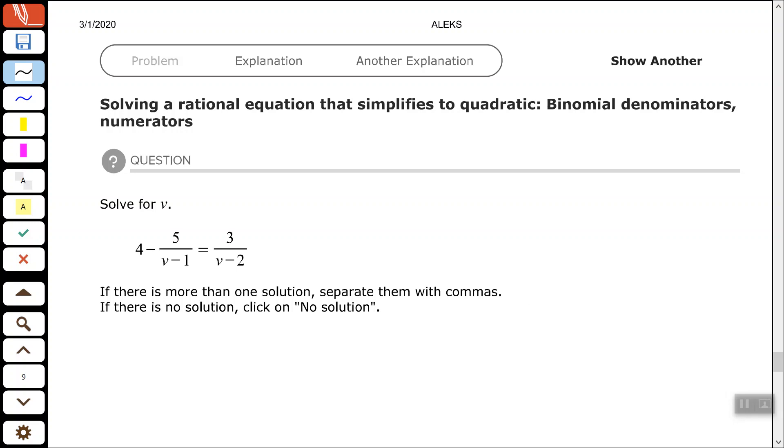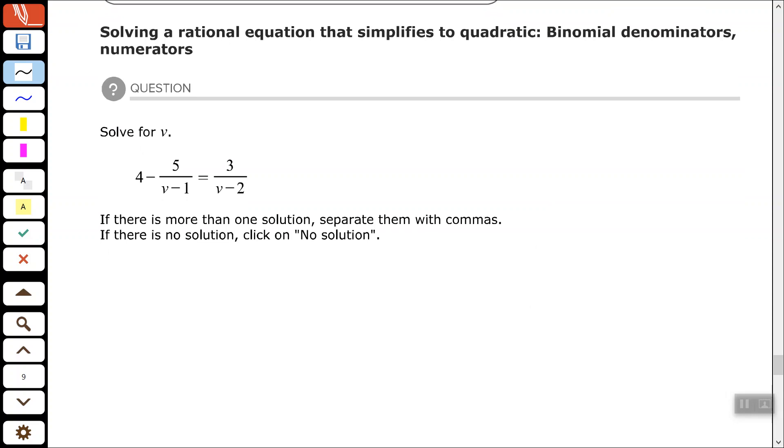So let's go ahead. We don't have anything to factor in our denominator, so let's identify the excluded values. My denominators with variables in them are V minus 1 and V minus 2. So I need to set each one of those equal to 0.